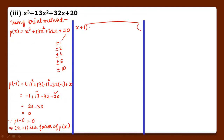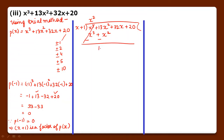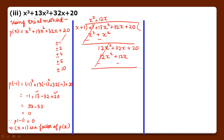Dividing x cube plus 13x square plus 32x plus 20 by x plus 1: x cube divided by x = x square. Multiply: x cube plus x square. Sign changed, cancelled. plus 13x square minus x square = 12x square plus 32x plus 20. 12x square divided by x = 12x. Multiply: 12x square plus 12x. Sign changed, cancelled. 32x minus 12x = 20x plus 20. 20x divided by x = 20. Multiply: 20x plus 20. Sign changed, cut. Remainder 0.